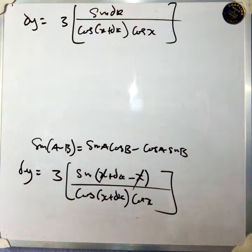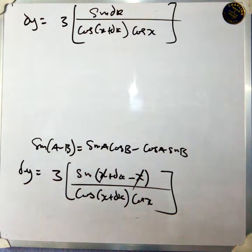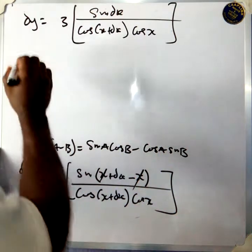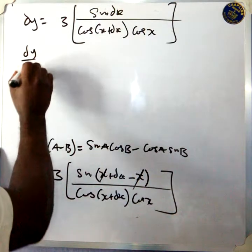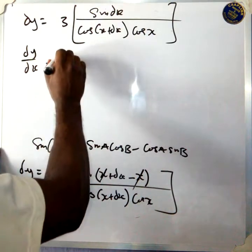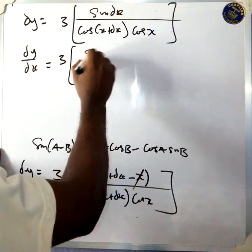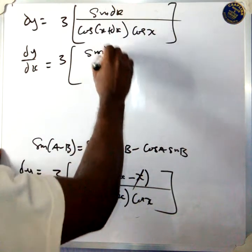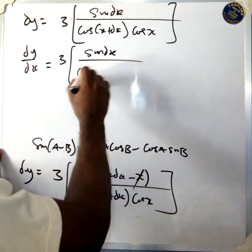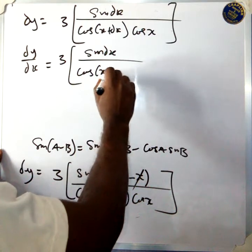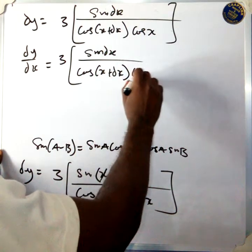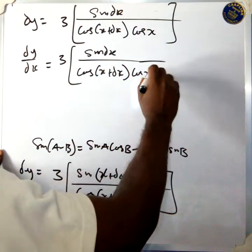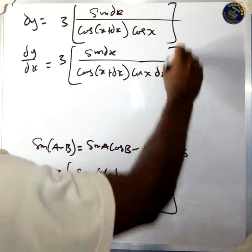So from here, the next step is you divide both sides by delta x. So you have delta y over delta x equals sine(delta x) over cos(x plus delta x) times cos x — since the delta x on top cancels with the delta x factor.